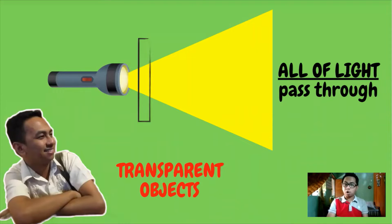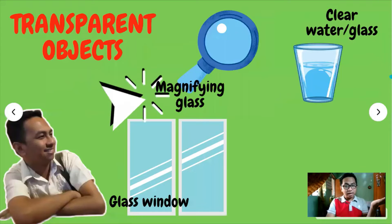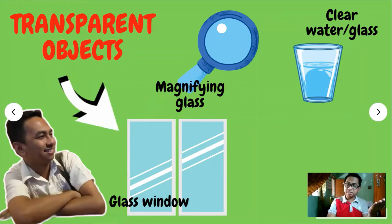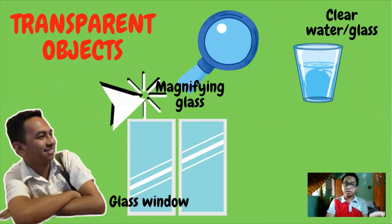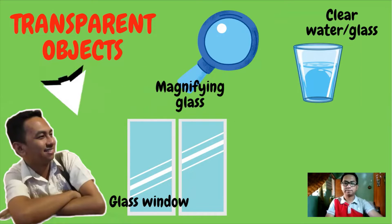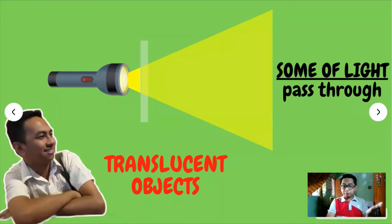When you try to light an object and you observe that light passes through on it, this object is called transparent. Examples of transparent objects are magnifying glass, glass window, clear water, and clear glass.